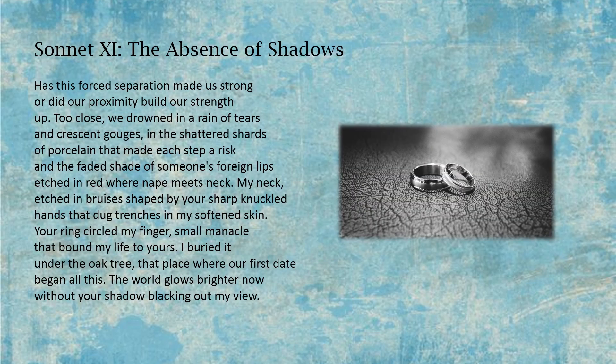Sonnet eleven: The Absence of Shadows. Has this forced separation made us strong, or did our proximity build our strength up? Too close. We drowned in a rain of tears and crescent gouges, in the shattered shards of porcelain that made each step a risk, and the faded shade of someone's foreign lips etched in red where nape meets neck. My neck, etched in bruises shaped by your sharp-knuckled hands that dug trenches in my softened skin. Your ring circled my finger, small manacle that bound my life to yours. I buried it under the oak tree, that place where our first date began all this. The world goes brighter now, without your shadow blacking out my view.